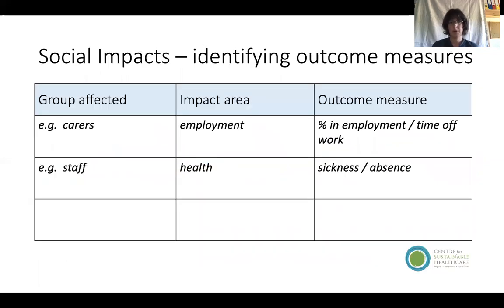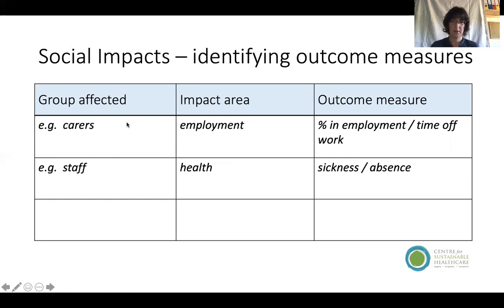For social impacts, there's no fixed method universally adopted — it's something we all need to work on. The important thing is to prioritize which social impacts are most meaningful for your system and the changes you've made. Some impacts may be positive and some negative, so it's important to capture both. For example, if the change has had a big impact on carers' ability to remain in work, we could measure the number of people who remain in employment or the time they're missing from work.